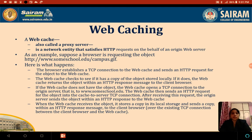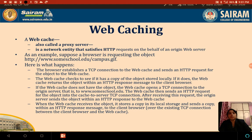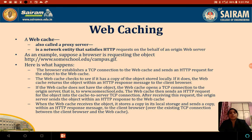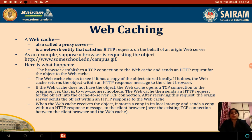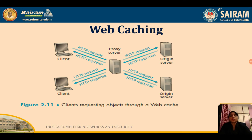So with this I am winding up this web caching concept. Here is the diagram: the client is giving an HTTP request to the proxy server. The proxy server gives the response if it has a copy of the answer with it; otherwise it forwards the request to the origin server, which is the Google server. It gets the response, stores it in its local storage, and forwards the same response to the client which asked the request. This is how it works.